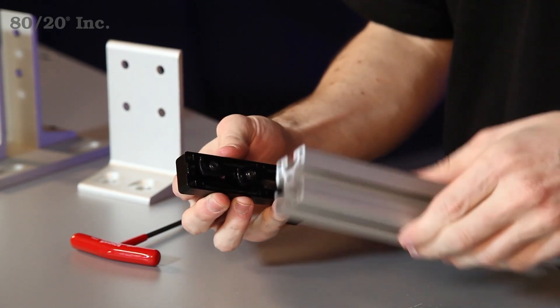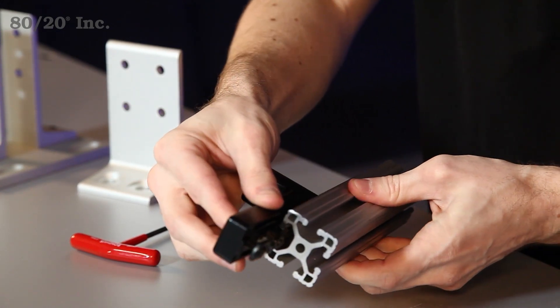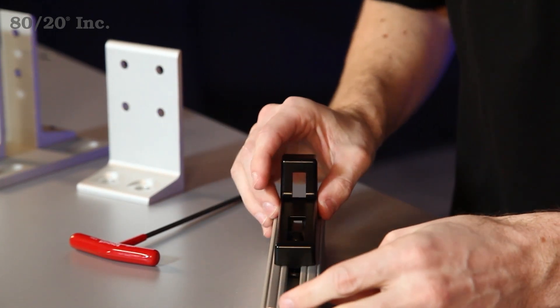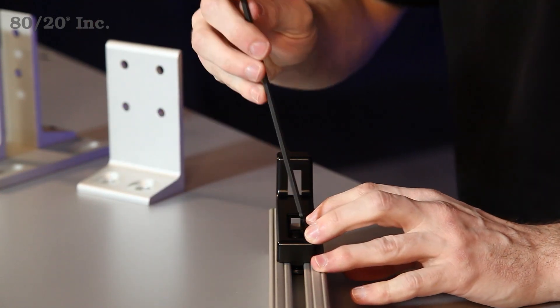Once we have that on there, we'll take our extrusion, slide the bracket right onto it, get it into position, and tighten it down with our wrench.